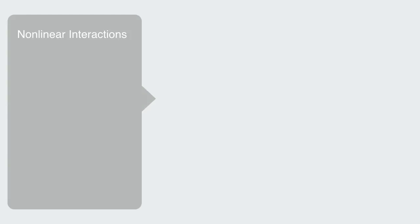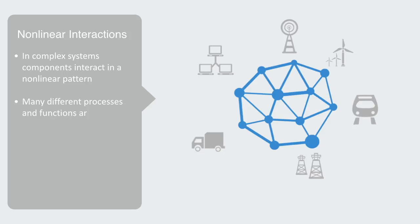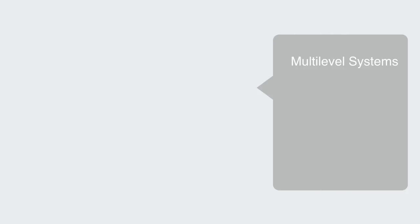As opposed to simple systems where components interact in a linear fashion, in complex systems components interact in a non-linear pattern. Processes don't just take place from start to finish independently along one sequential process. Instead, many different processes and functions are taking place within a parallel architecture, interacting across and between processes and domains in a networked fashion. A metro area is a composite of many overlapping parallel infrastructure systems, from transportation and water supply to electrical power grids and telecommunications networks. The components interact not just across domains, but also across scales.